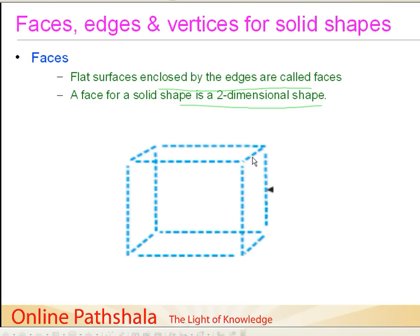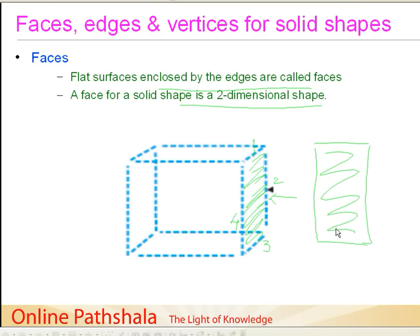Let us take the surface enclosed by four edges — edge one, two, three and four. These four edges form a flat surface. When we look at it from this direction, we see a flat surface like this. We can count the number of faces: this is number one, then we come to the top — two, then the side — three, then the bottom — four, then from the front — five, and from the back — six.